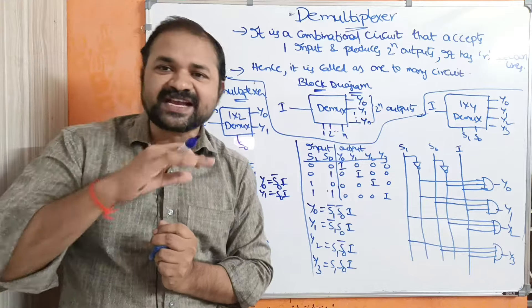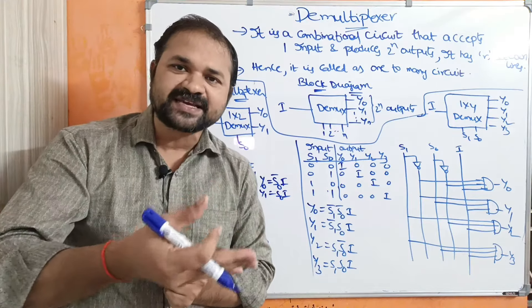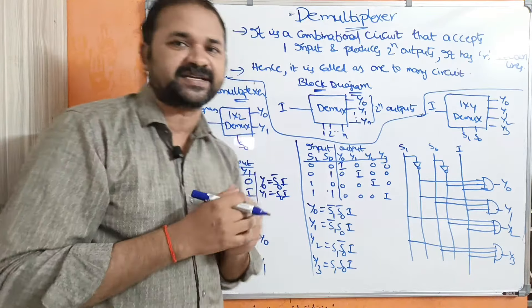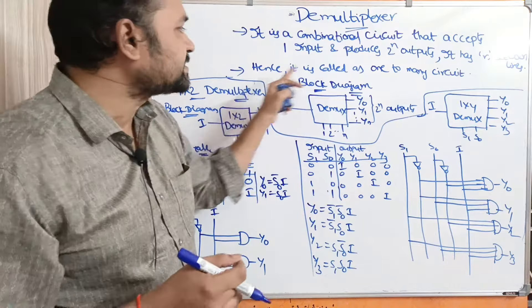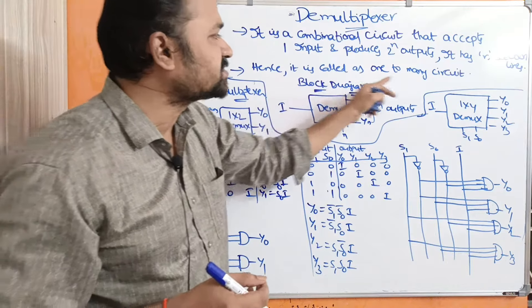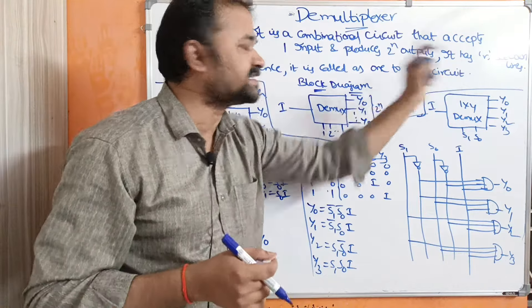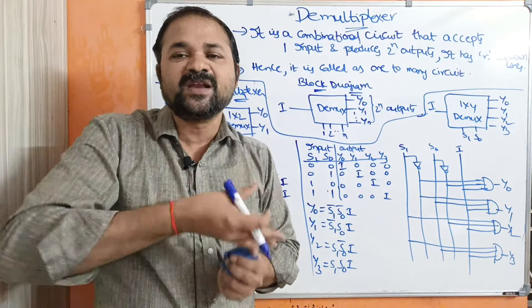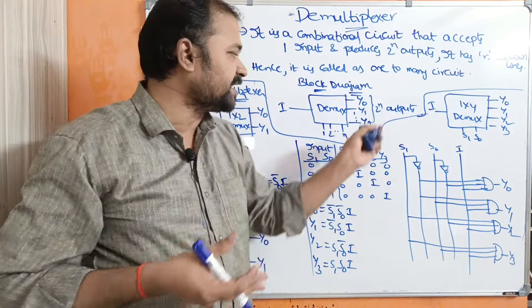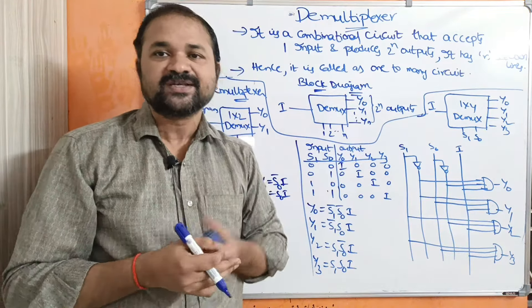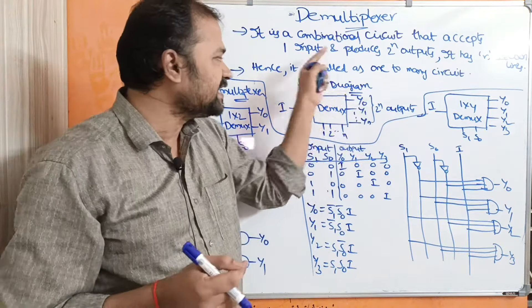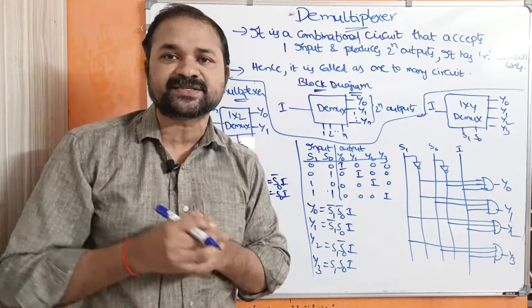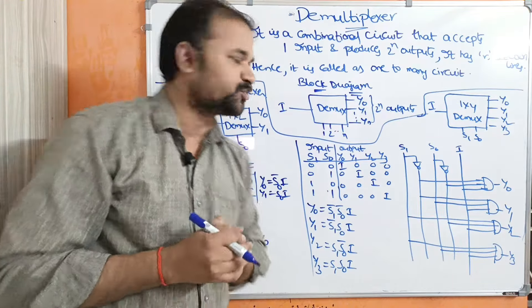The selection lines are the same in multiplexor as well as in demultiplexor. Hence, it is called a one-to-many circuit, because one input will be distributed over several outputs. That is why a demultiplexor can also be called a one-to-many circuit.